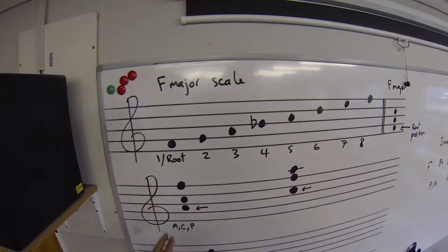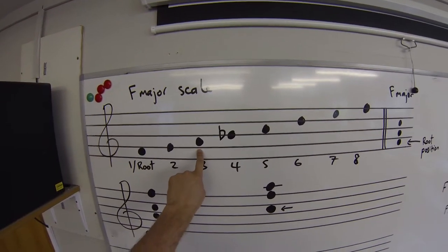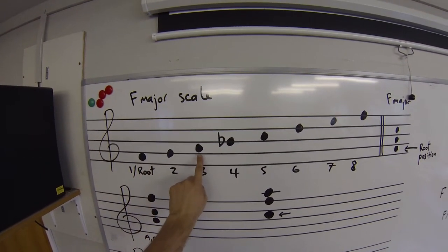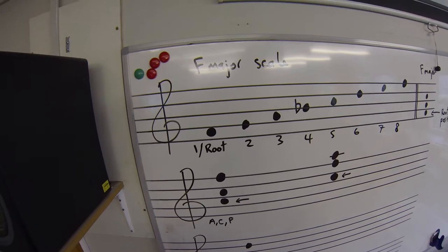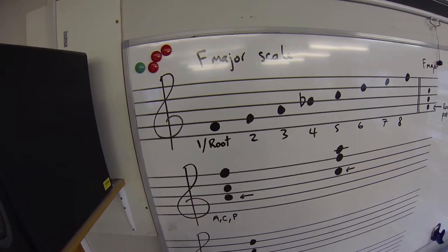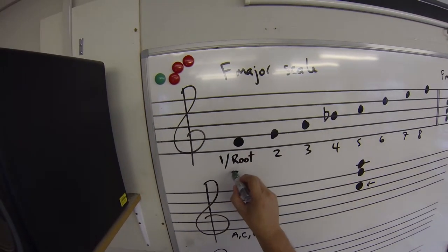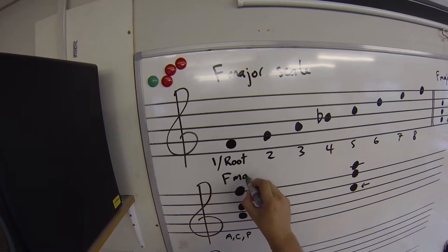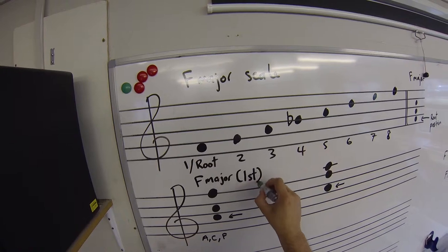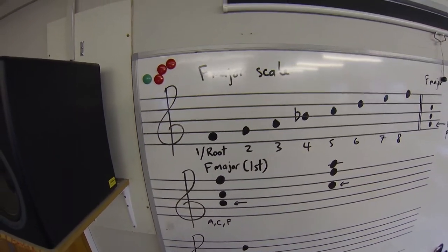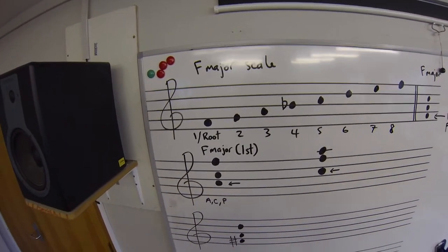So because the third of the scale, note three, is now the bass note, that's the first way that we might mix up the structure of this chord, and so this becomes known as F major in first inversion.